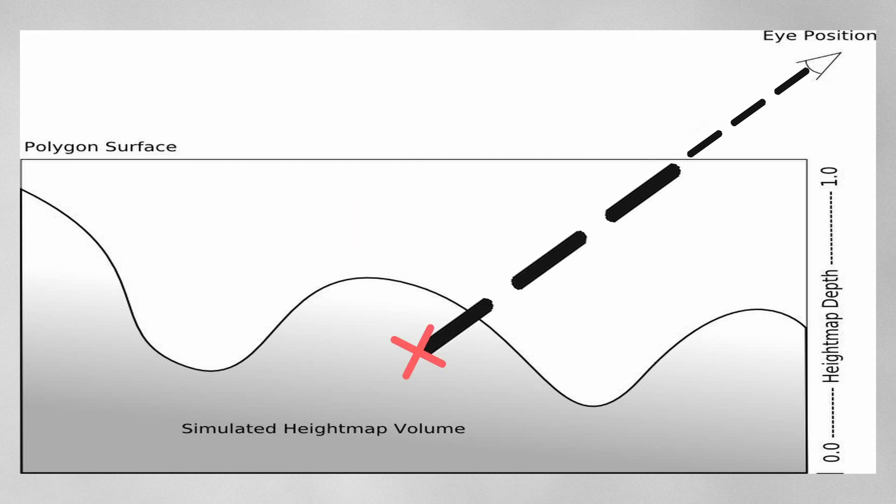So now our line depth is bigger than height map depth here, but as you can see our line is not exactly on the curve height. What we do now is to average between this position and previous position and calculate our UV in this way.